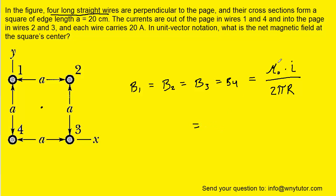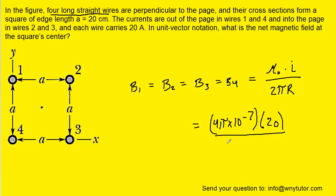Now we can go ahead and plug in the known values. Mu is a constant equal to 4π times 10 to the minus 7. The current is represented by I and is in the standard unit of amps, so we can just plug in 20. Then we have 2π times the distance. A distance of 20 centimeters is given to us as the distance for the edge of the square.